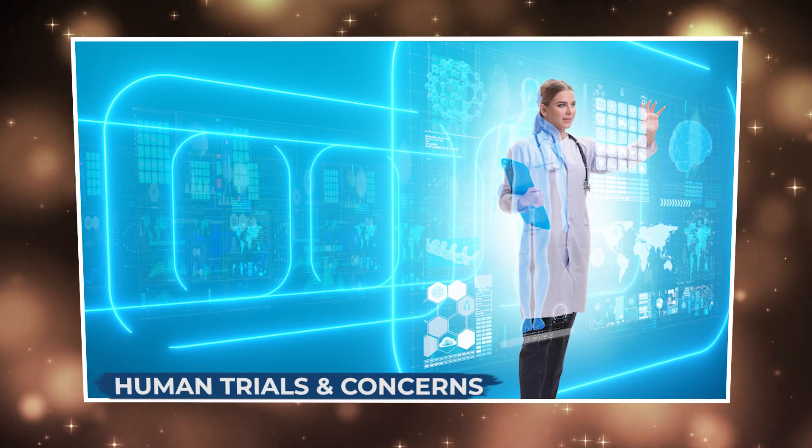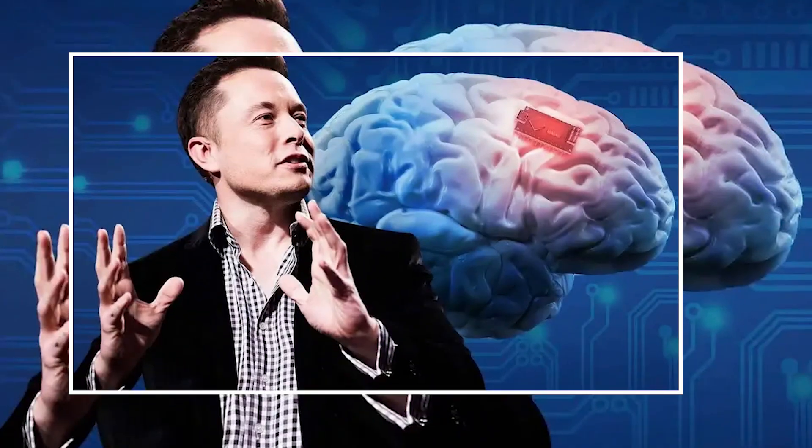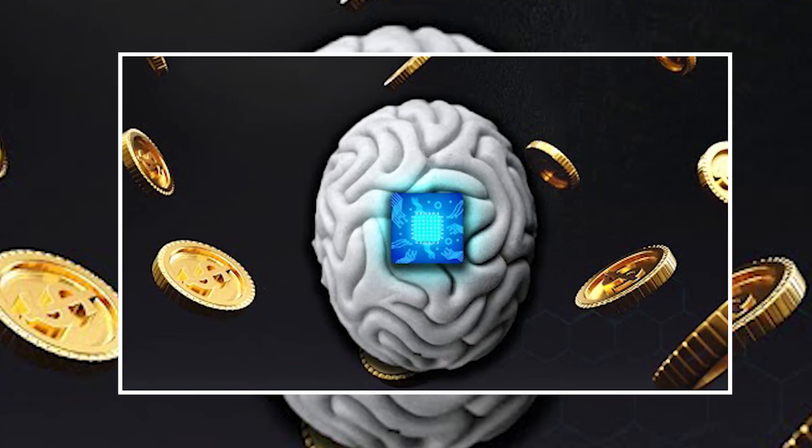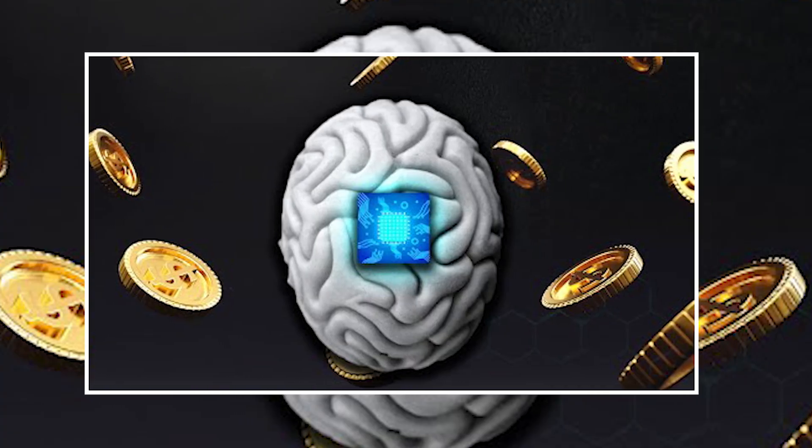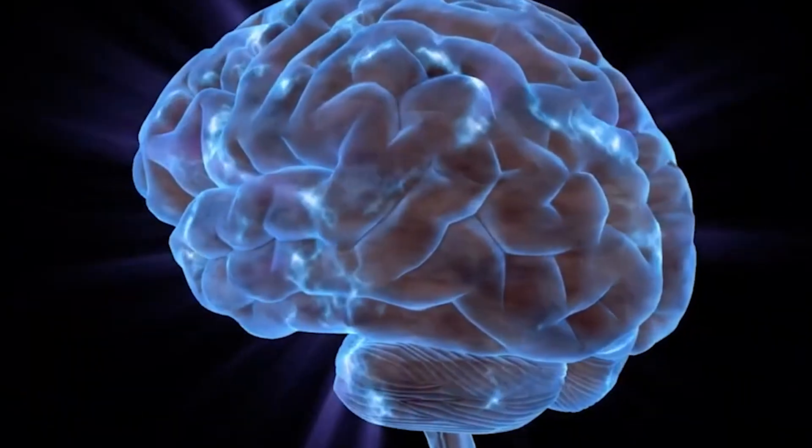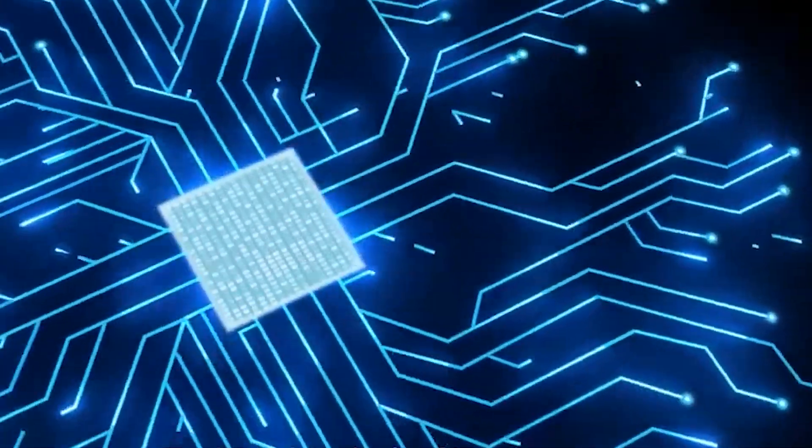In January 2024, Neuralink entered a new chapter in human history. For the first time, the company implanted its brain chip into a human patient, a man suffering from paralysis.